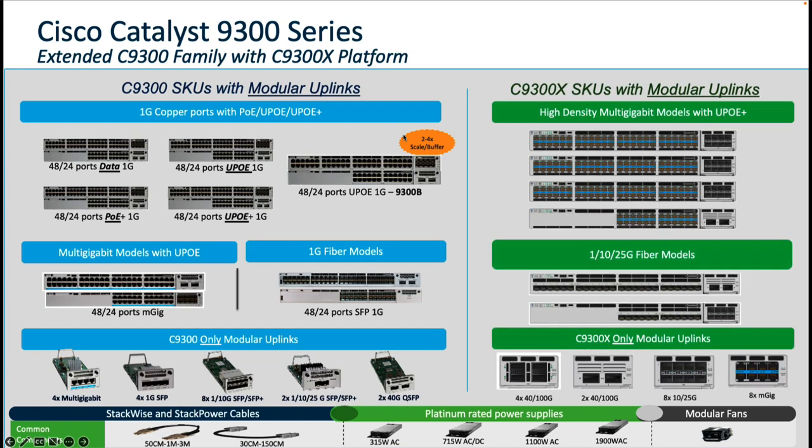In terms of platforms, the 9300X family comprises both copper and fiber variants. In the copper variants there are four options: the 24HX and 48HX models are capable of multi-gig 10G as well as UPoE+ on the downlinks. The 48TX is focused on data-related use cases, and the 9300X-48HXN can do 40 ports of multi-gig 5G and 8 ports of multi-gig 10G.